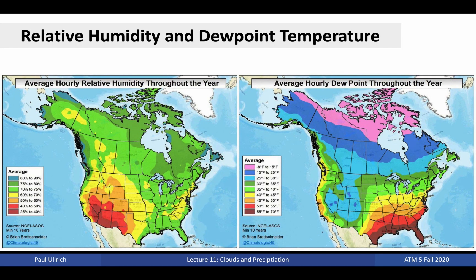Over North America, the plot at the left here shows average hourly relative humidity, and the plot at the right shows dew point temperature. Observe that relative humidity is particularly low in the U.S. Southwest, where dew point is similarly low. On the other hand, the U.S. Southeast is hot and moist, leading to high relative humidity and dew point. As we move farther north, the air's water vapor content and temperature both drop off. Relative humidity, which is a fraction with a numerator proportional to water vapor content and a denominator proportional to temperature, stays roughly constant. However, dew point temperature, which is only dependent on the amount of water vapor in the air, drops off quickly.